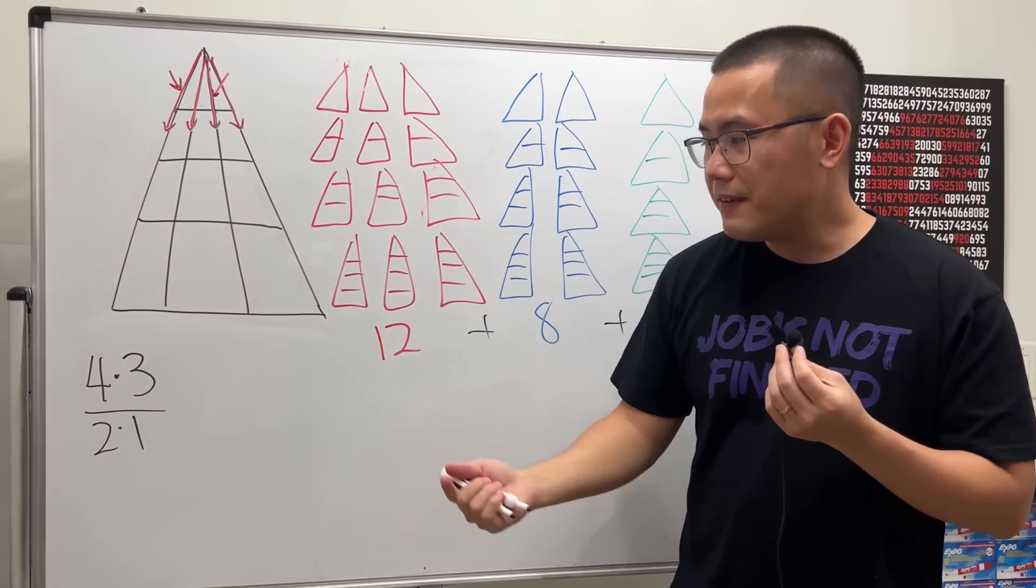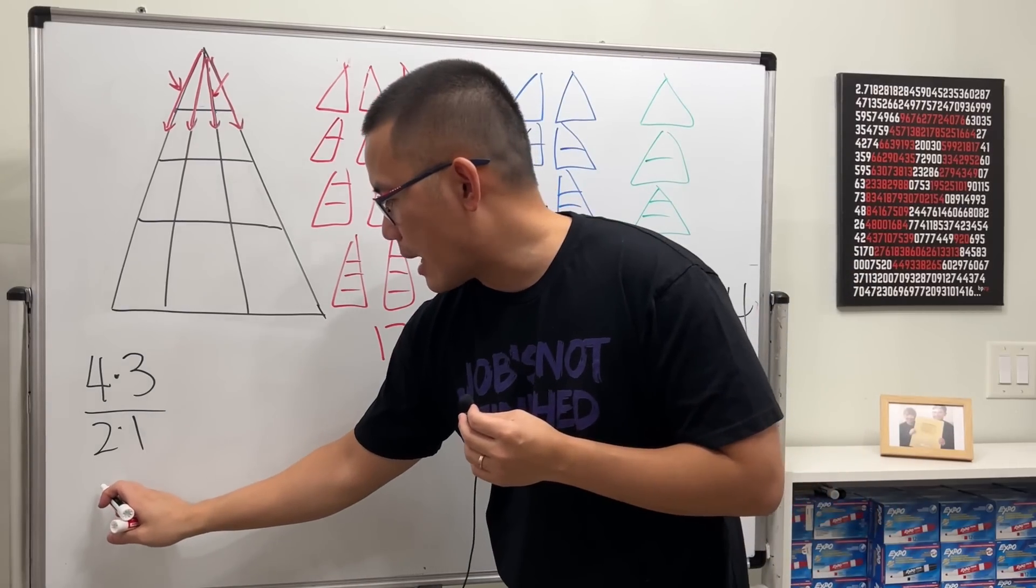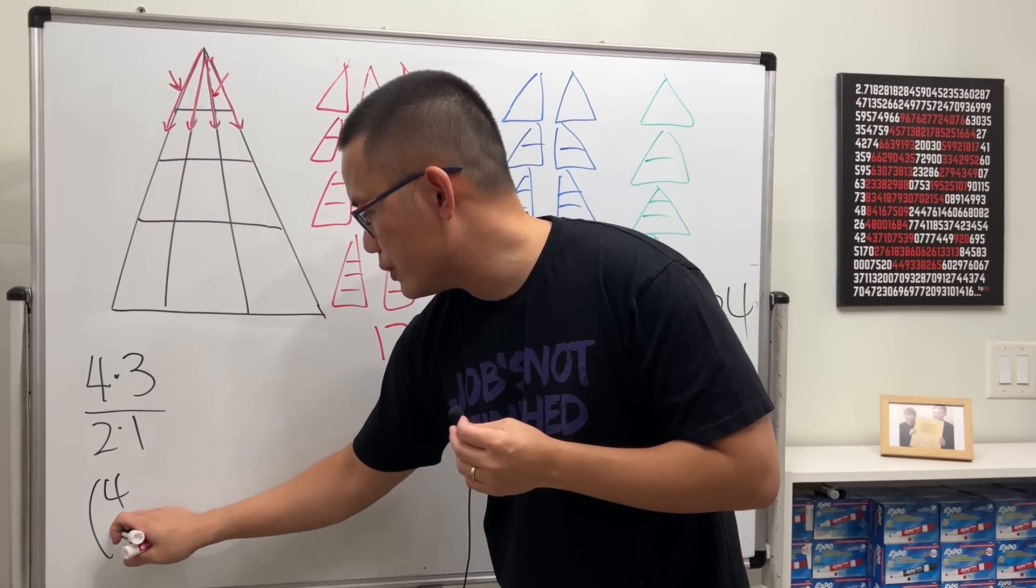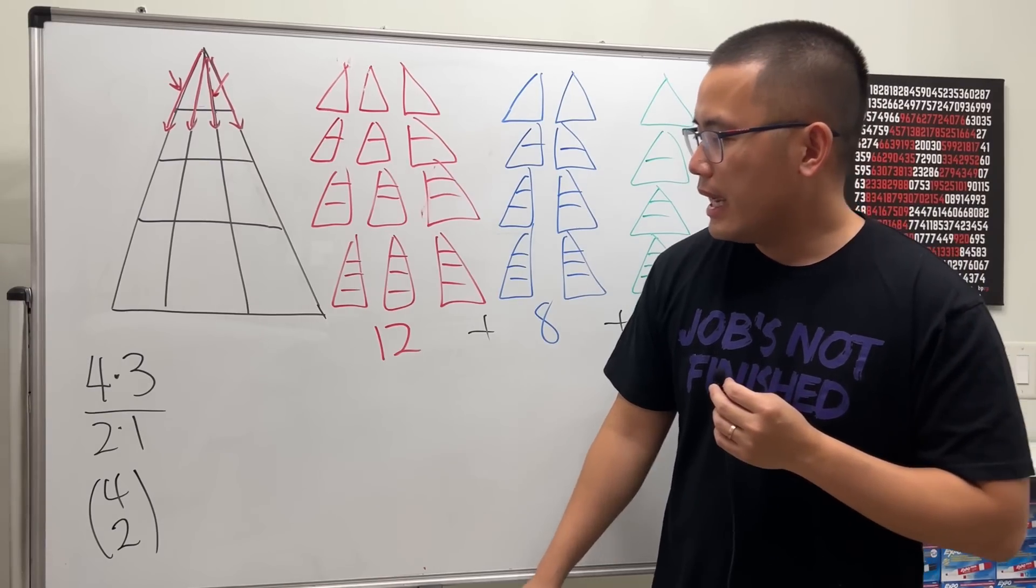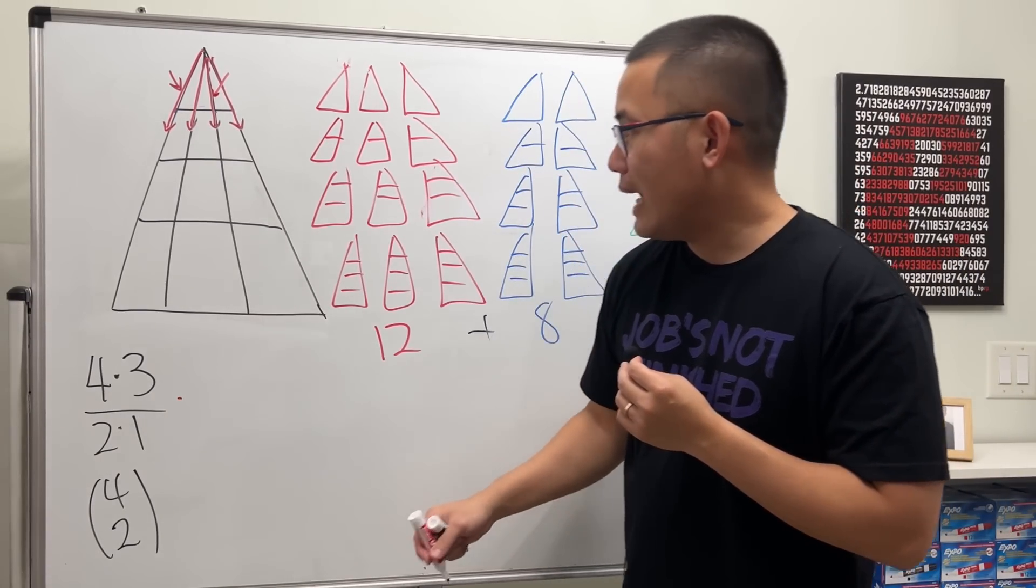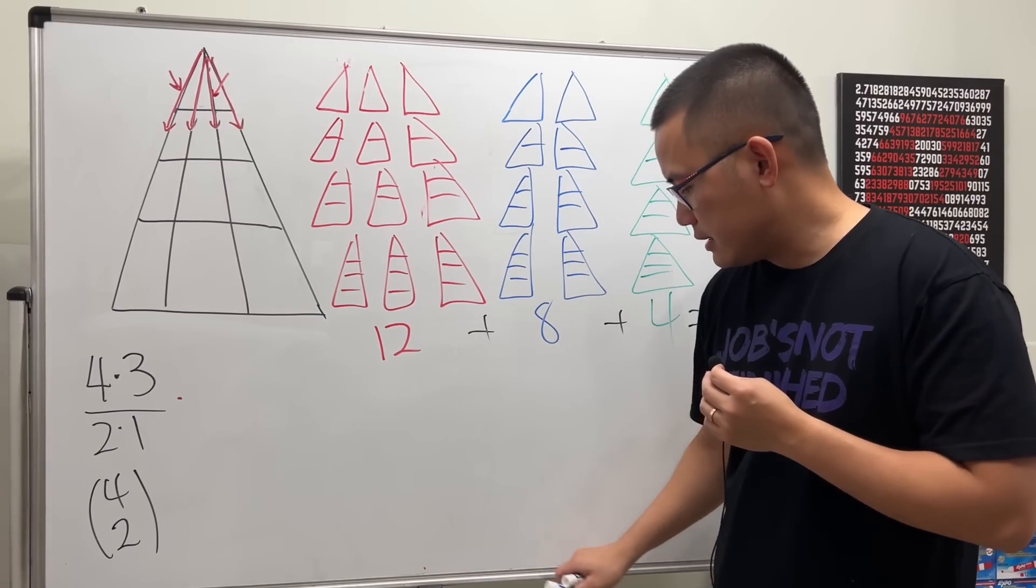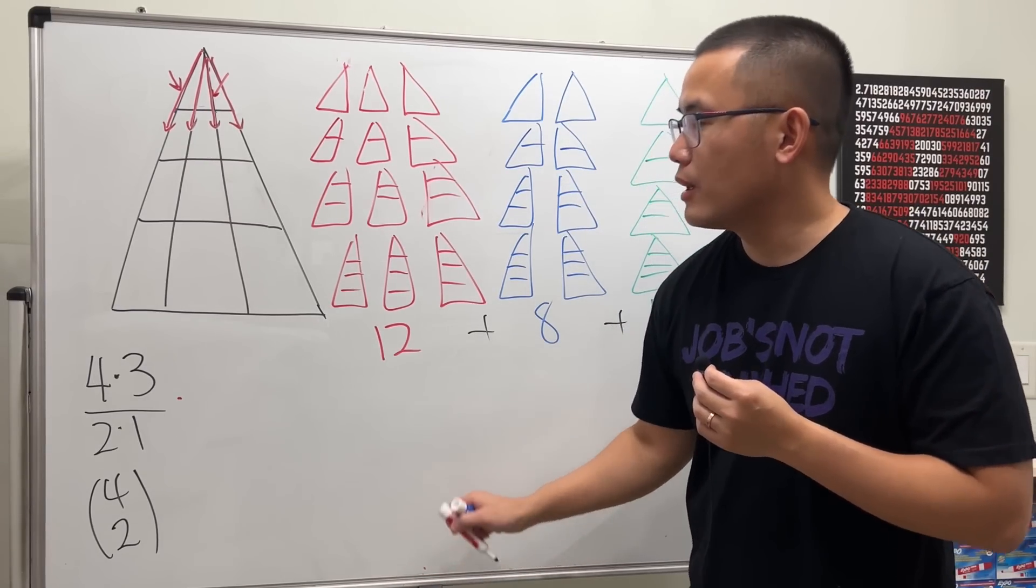In fact, there's a nice way to do it, and that's the combination: four choose two. Four lines, we want to choose two of them. And then now we will have to choose the base. The base is how many choices?